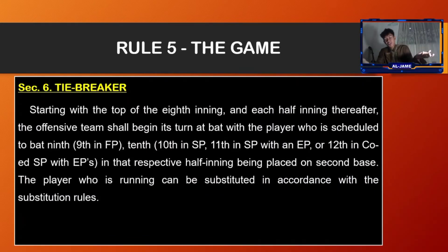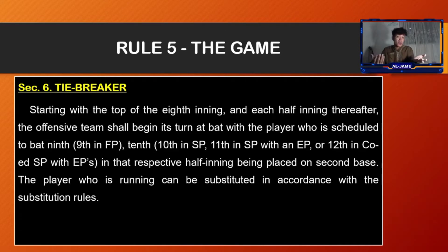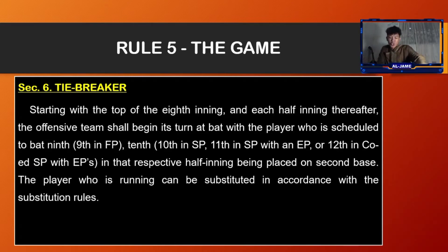Section number six, the tiebreaker: starting with the top of the eighth inning and each half inning thereafter, the offensive team shall begin a turn at bat with the player who is scheduled to bat last in the lineup placed on second base. The player who is running can be substituted in accordance with the substitution rules.